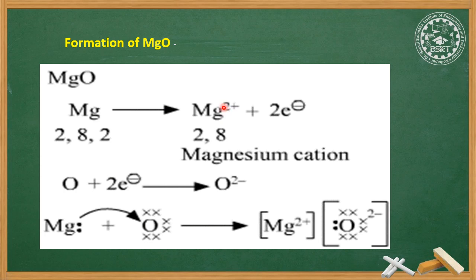Magnesium loses two electrons, acquiring two positive charges. Oxygen has atomic number 8 with electronic configuration 2, 6. Oxygen gains 2 electrons, completing its octet and acquiring two negative charges. There is a complete transfer of electrons from magnesium to oxygen, forming magnesium ion and oxygen ion. The electrostatic force of attraction between these ions is the ionic bond, and MgO — magnesium oxide molecule — is formed.